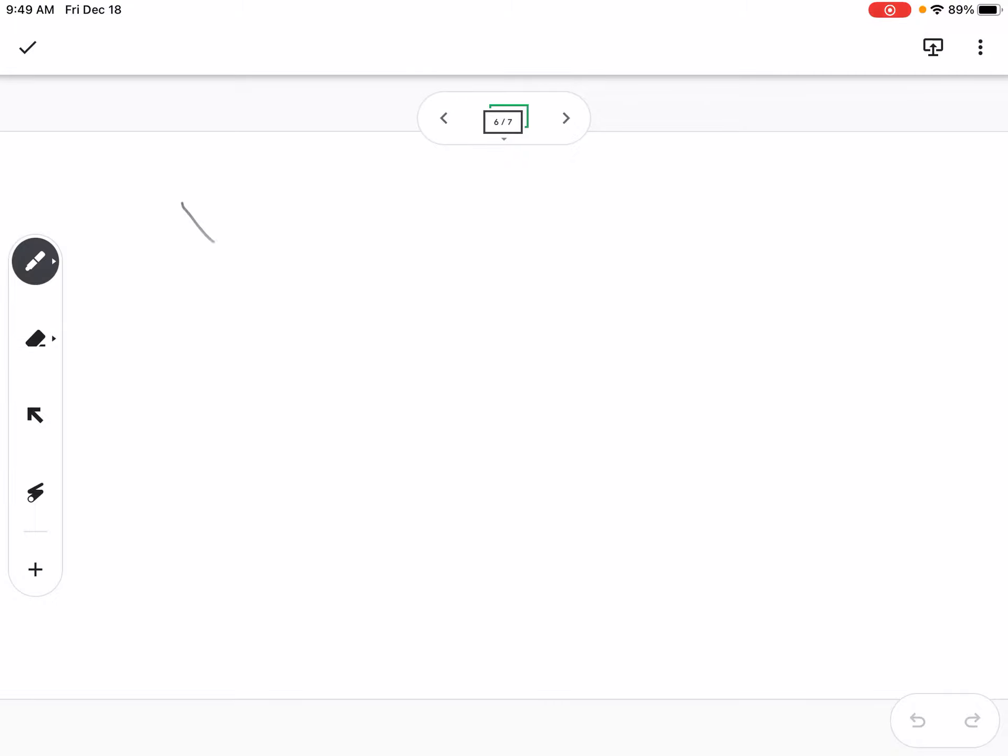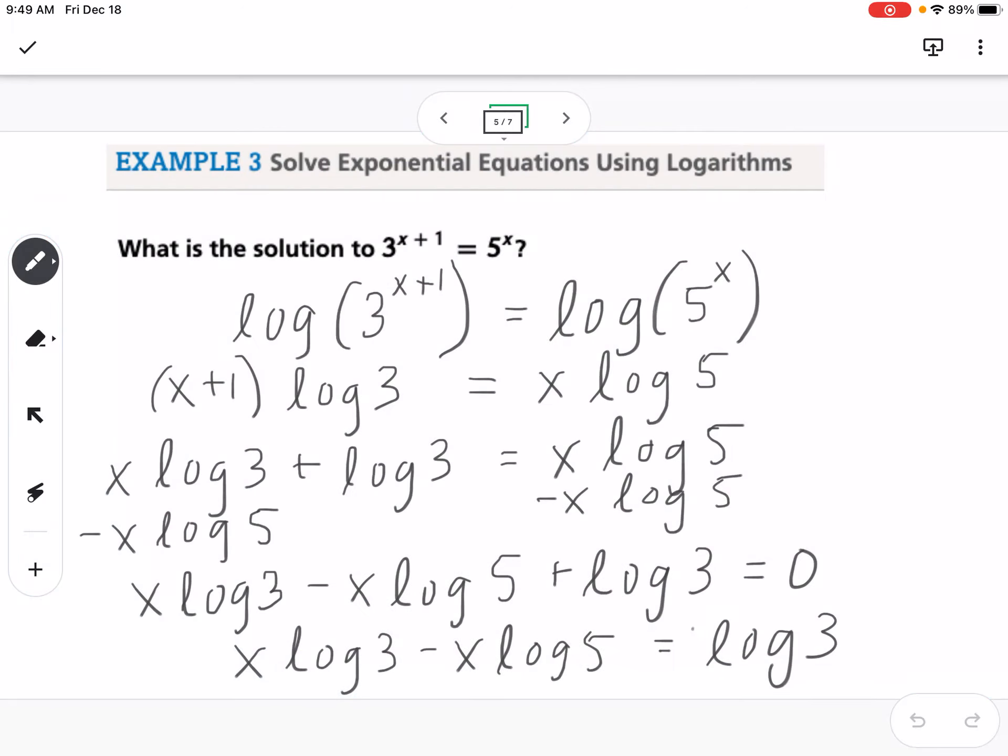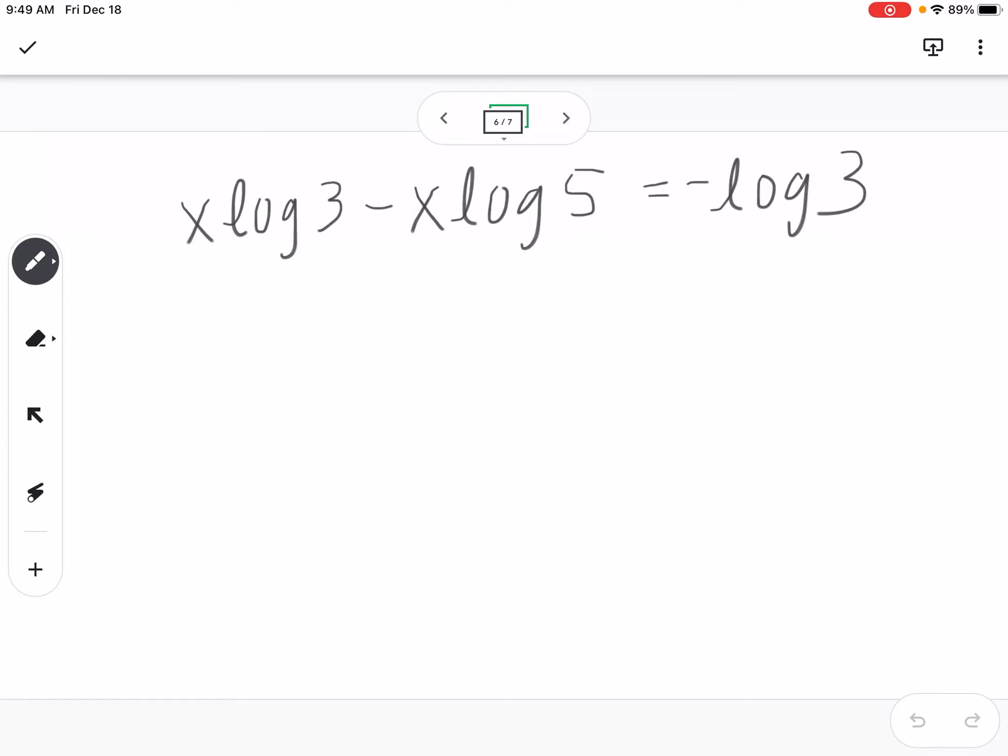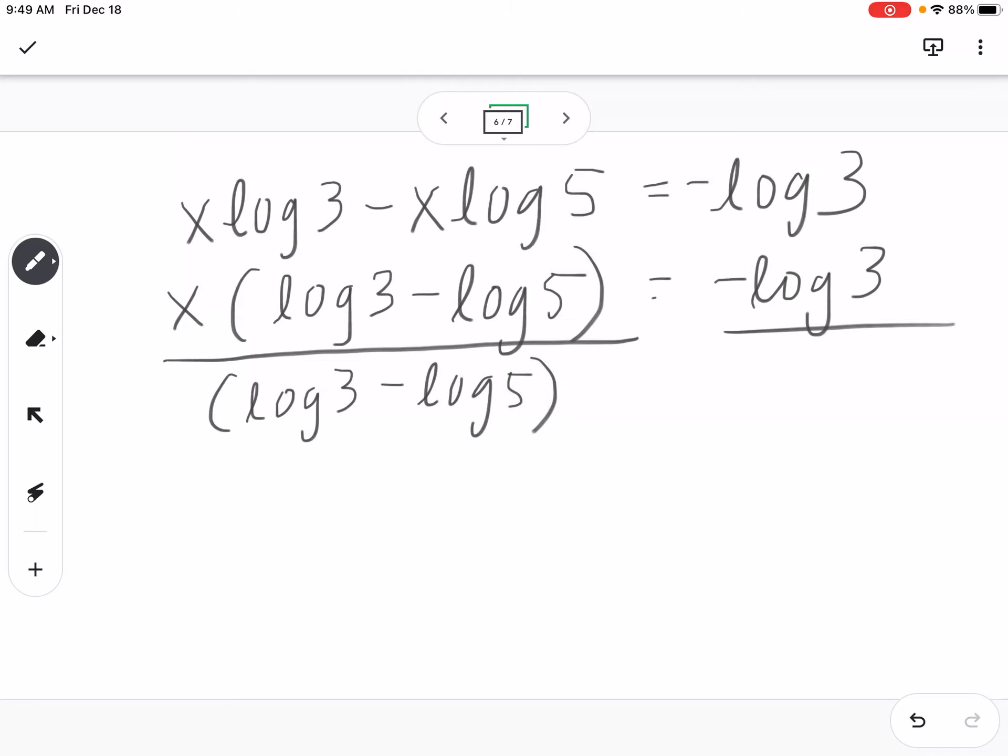I have x log of 3 minus x log of 5 equals negative log of 3. Now I can factor out this x. So this can be x times log of 3 minus log of 5 equals negative log of 3. So I want to figure out what x is. I'm going to divide by log of 3 minus log of 5 on both sides.